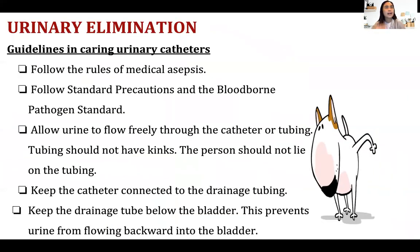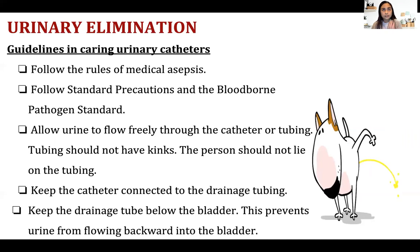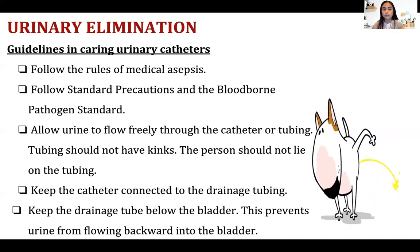What are the guidelines for handling patients with a urinary catheter? As a nursing assistant, your main responsibility is catheter care. Also, you may need to drain urine using the catheter. First, follow the rules of medical asepsis, standard precautions, and blood-borne pathogen standards. Allow urine to flow freely — make sure the tubing is not kinked, as the patient may feel pain if urine is stuck in the tube.